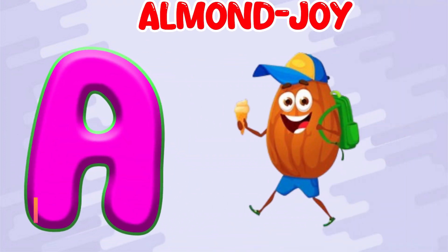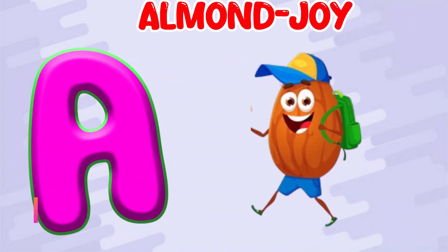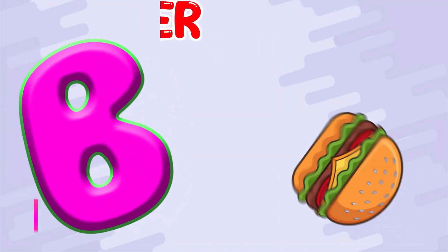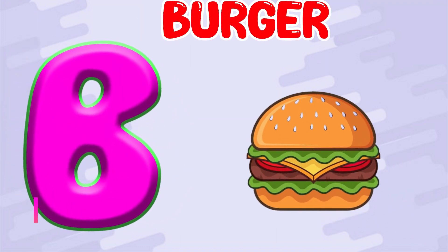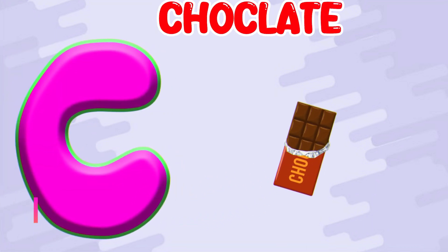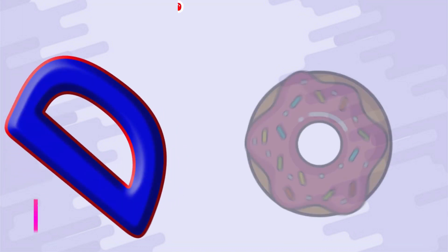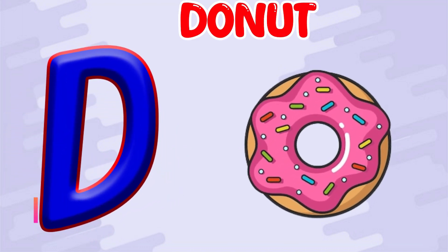A is for Almond Joy. A. Almond Joy. B is for Burger. B. Burger. C is for Chocolate. C. Chocolate. D is for Donuts. D. Donuts.